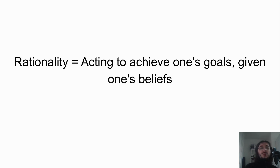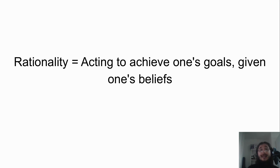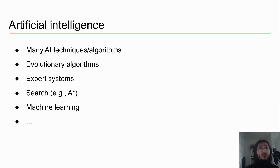Rationality basically means that if you're rational, you are acting to achieve your own goals given your beliefs. You're building the best strategies possible to achieve your goals given the situation and context you find yourself in. In that sense, a rational agent is an agent able to optimize its actions in order to achieve its goals. So artificial intelligence is more than machine learning.